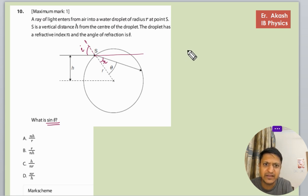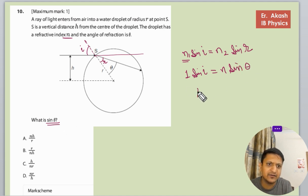First we will use Snell's law: n₁ sin i equals n₂ sin r. Here the refractive index of air is one, so sin i equals n₂, which is n times sin r, which is sin theta. So sine theta will become sine i divided by n.